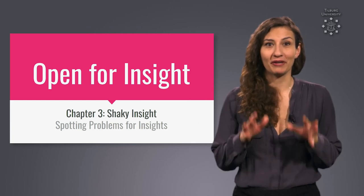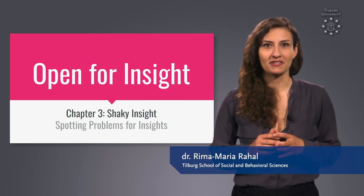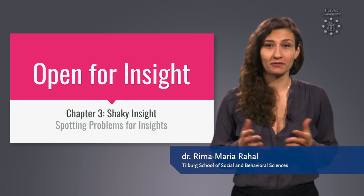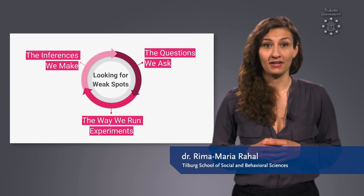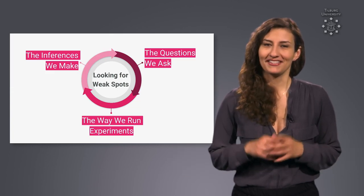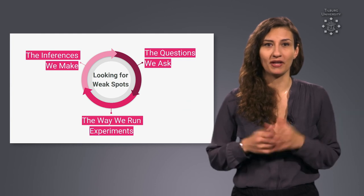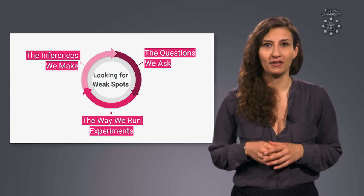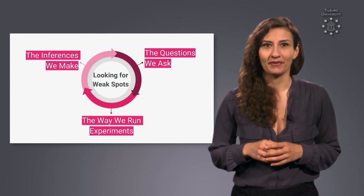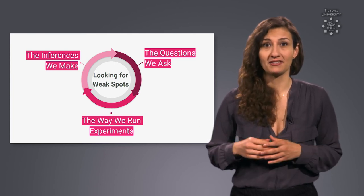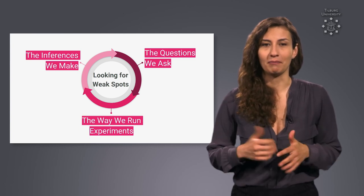Let's get started with looking for shaky insight. We're now in the business of defining potential problems for making inferences and aiming to be able to spot them. To get a better overview, let's take a systematic approach. Where could we look for shaky insight and weak spots? Here are three parts of the research cycle where we might find them: concerning the questions we ask, the way we run experiments, and the inferences we then make.